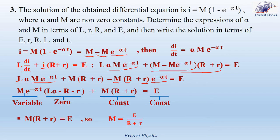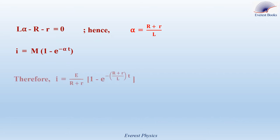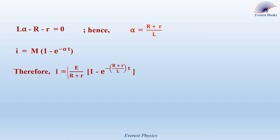Therefore M is equal to E over (R plus r). Now, to determine the expression of α, we use the equation Lα minus capital R minus small r equals zero. Rearranging, α is equal to (R plus r) over L. Replacing M and α by their values, the full solution is: I equal to E over (R plus r), times (1 minus e to the power minus (R plus r)/L · T).